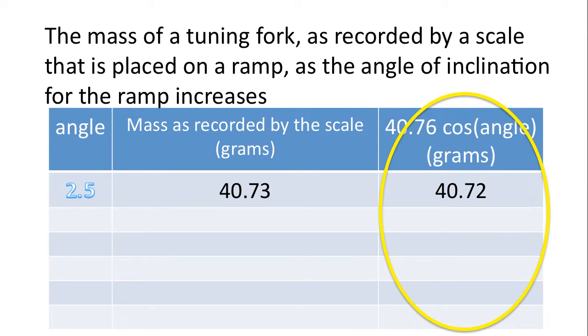Now, what I want you to do is compare that column in the table to this column in the table. And you'll notice that these two columns are virtually identical. And so the question is, where does this formula, 40.76 times the cosine of the angle, come from? Well, it comes from physics. And this goes to show you the power of physics. That you can write an equation down and then use it to predict an outcome.